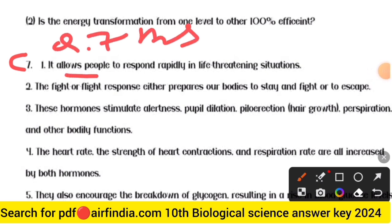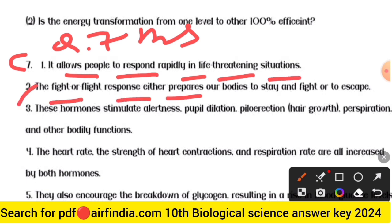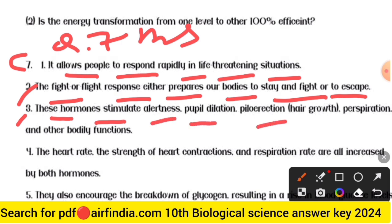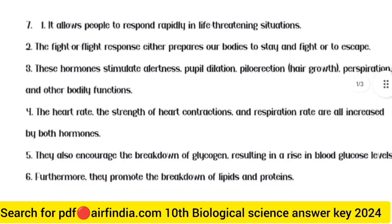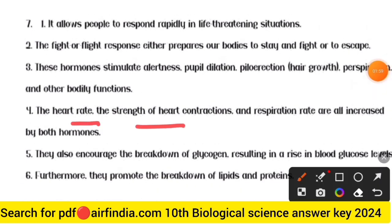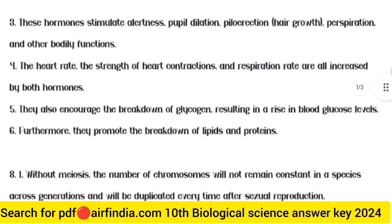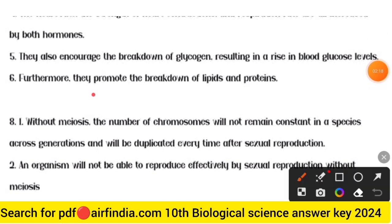Question seven: it allows people to respond rapidly in life-threatening situations. Second point — the fight or flight response either prepares our bodies to stay and fight or to escape. Third — these hormones stimulate alertness, pupil dilation, piloerection, hair growth, and perspiration. Fourth — heart rate, strength of heart contractions, and respiration rate are all increased by both hormones. Fifth — they also encourage the breakdown of glycogen resulting in a rise in blood glucose levels, and they promote the breakdown of lipids and proteins.